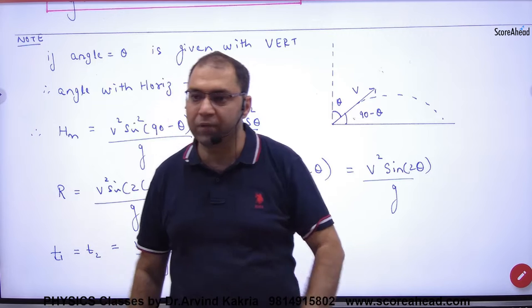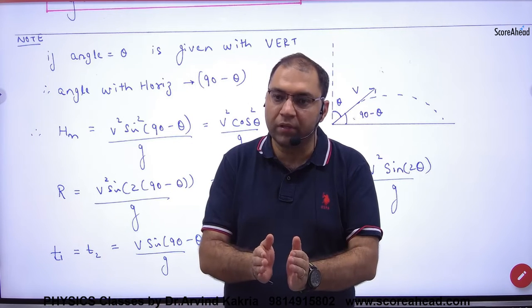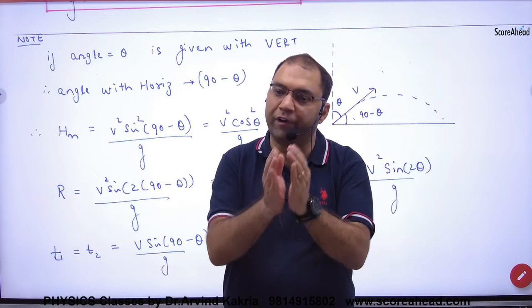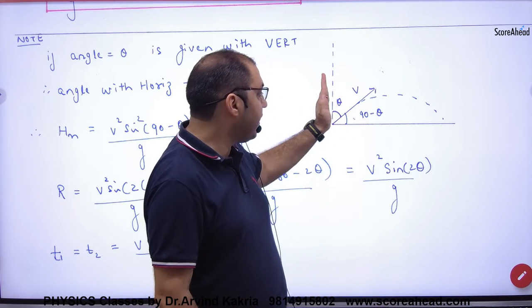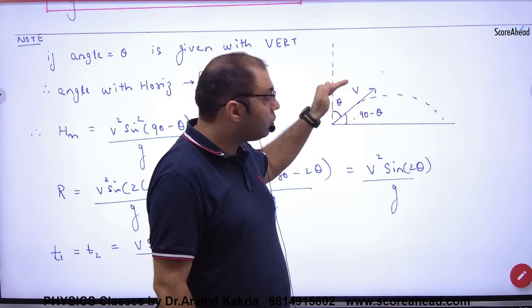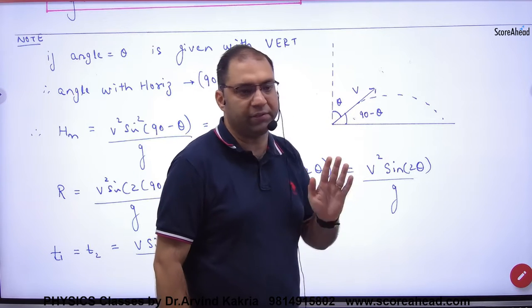What happens sometimes? You will be given that the angle is with a vertical. If theta is not with horizontal, if V has made a vertical angle with a vertical, then what is with horizontal? 90 minus theta.